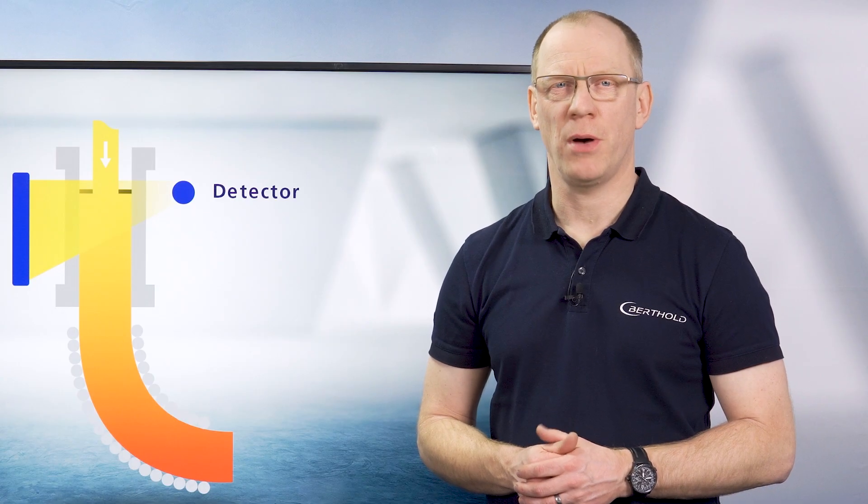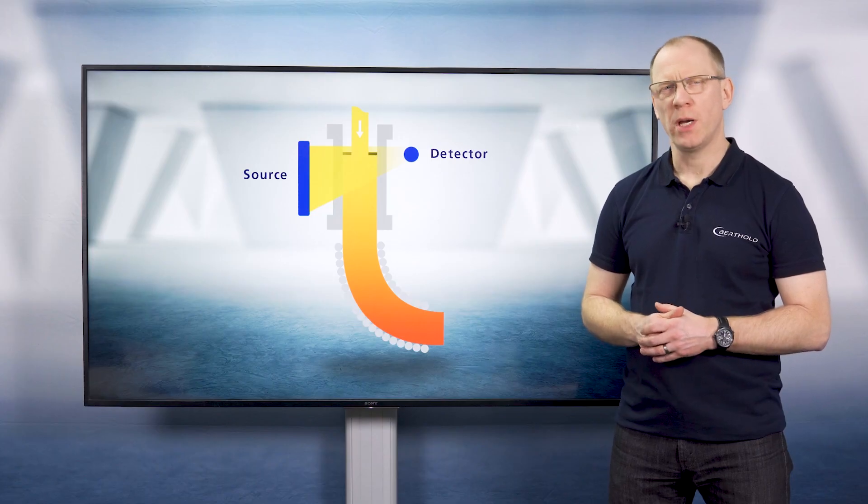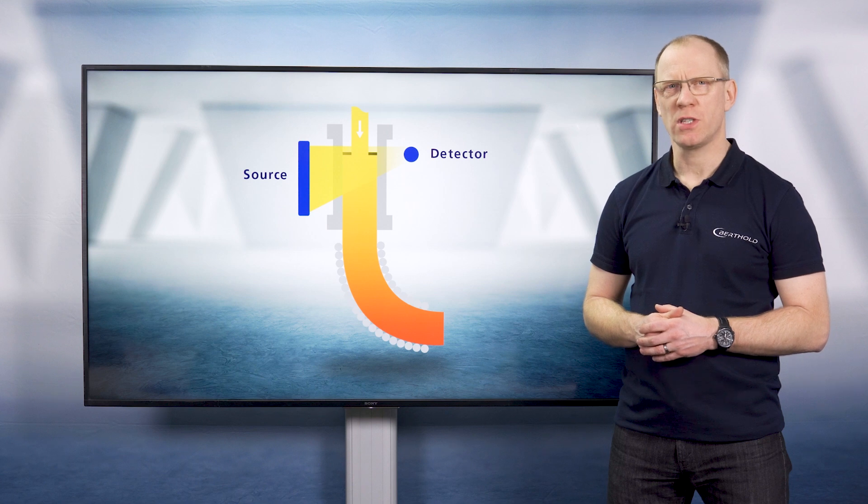In this process, a powder called casting powder is used. And this is used for covering the steel and preventing the steel from re-oxidation. A radiometric approach is widely used for this application.